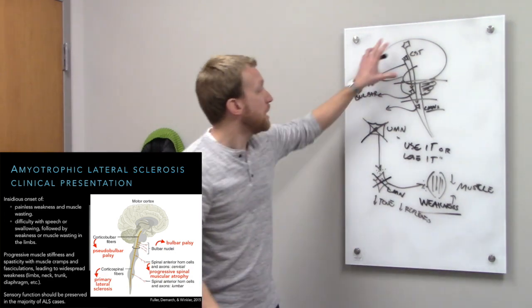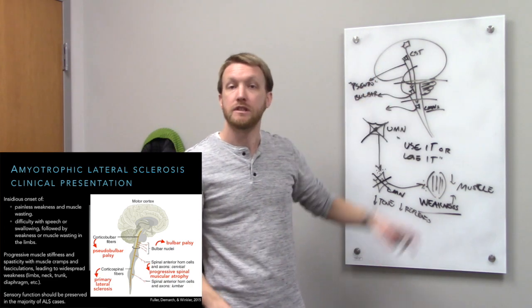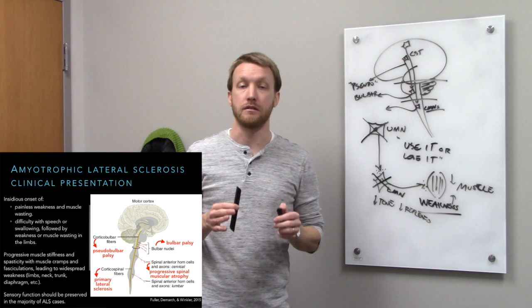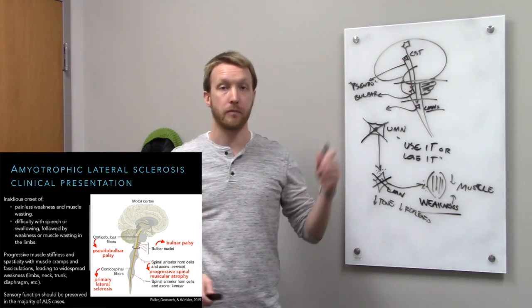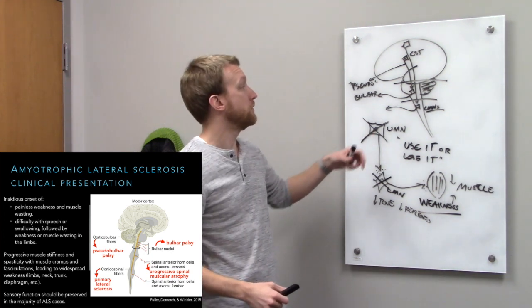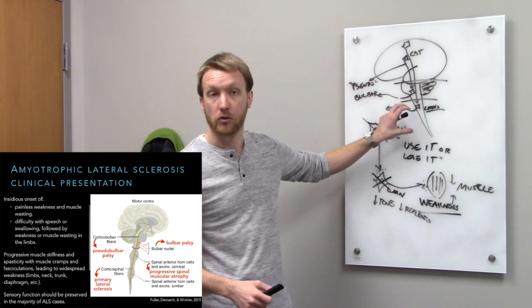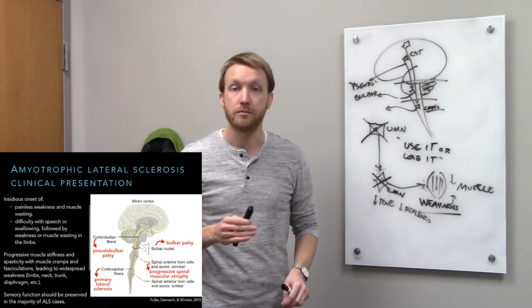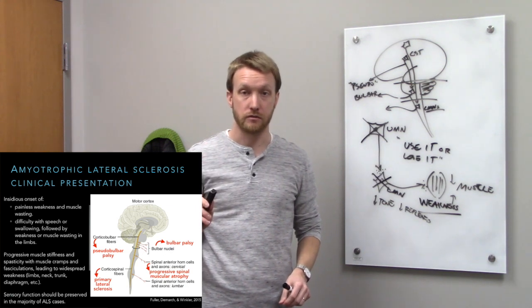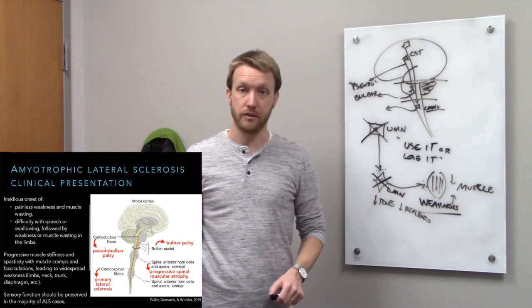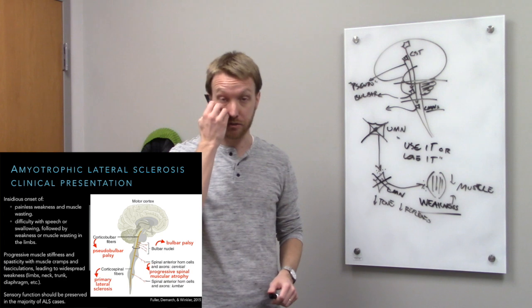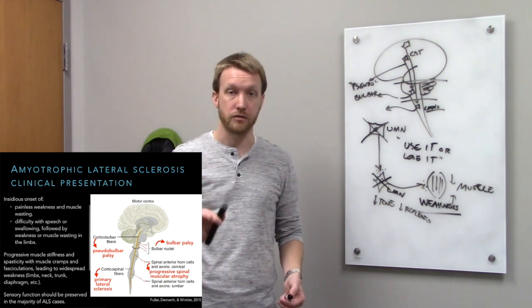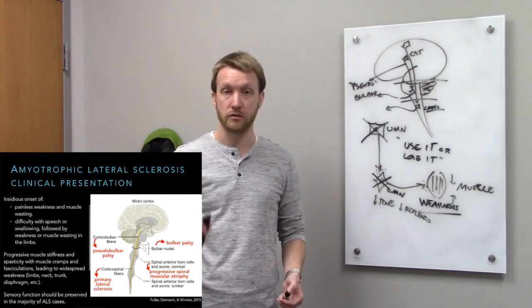Because ALS is a disease of motor neurons — both upper and lower — affecting brain stem and spinal cord function, sensory function is spared. Regardless of which population is affected first, all are going to experience some degree of degeneration, because this is a progressive disorder, just like all neurodegenerative disorders we've covered.